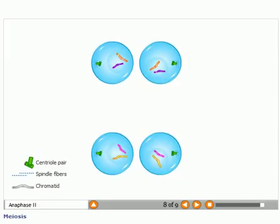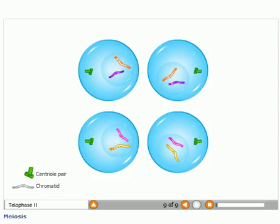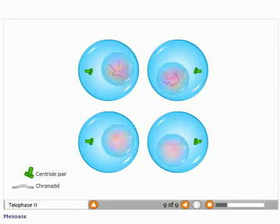The cell completes its division. Chromosomes become less and less distinct and the nuclei form.